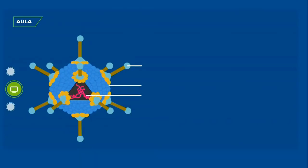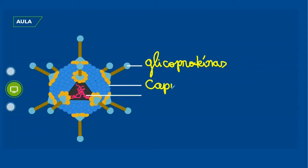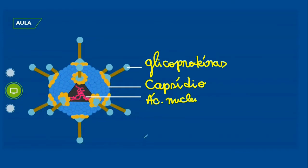Vamos ver um dos tipos de estrutura dos vírus. Aqui temos um vírus que não é envelopado. Essa estrutura são as glicoproteínas, importantes no momento em que o vírus vai invadir a célula. O envoltório é chamado de capsídeo, formado principalmente por proteínas. Dentro do capsídeo temos o material genético — o ácido nucleico, que pode ser tanto DNA quanto RNA. Nesse caso, ele não tem aquele envelope como o vírus anterior.